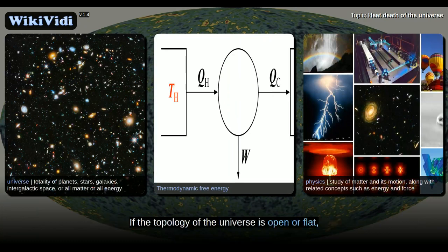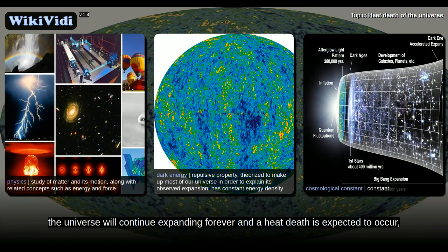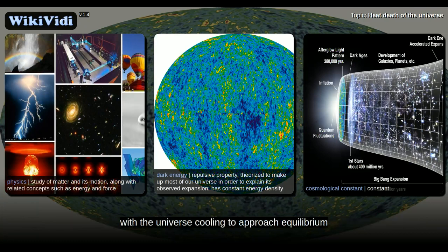If the topology of the universe is open or flat, or if dark energy is a positive cosmological constant, the universe will continue expanding forever and a heat death is expected to occur, with the universe cooling to approach equilibrium at a very low temperature after a very long time period.